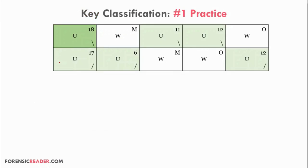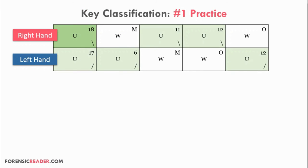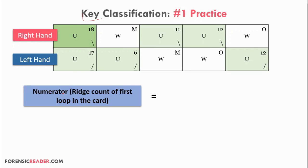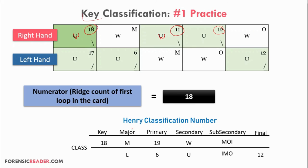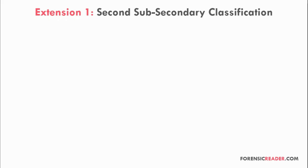In the key classification practice, all loops in the 10-digit card are highlighted. The key value is given by the ridge count of the first loop appearing on the card. In the practice example, the first loop has a ridge count of 18, so the key value is 18. If a whorl appears first, the whorl ridge trace value would be used instead.